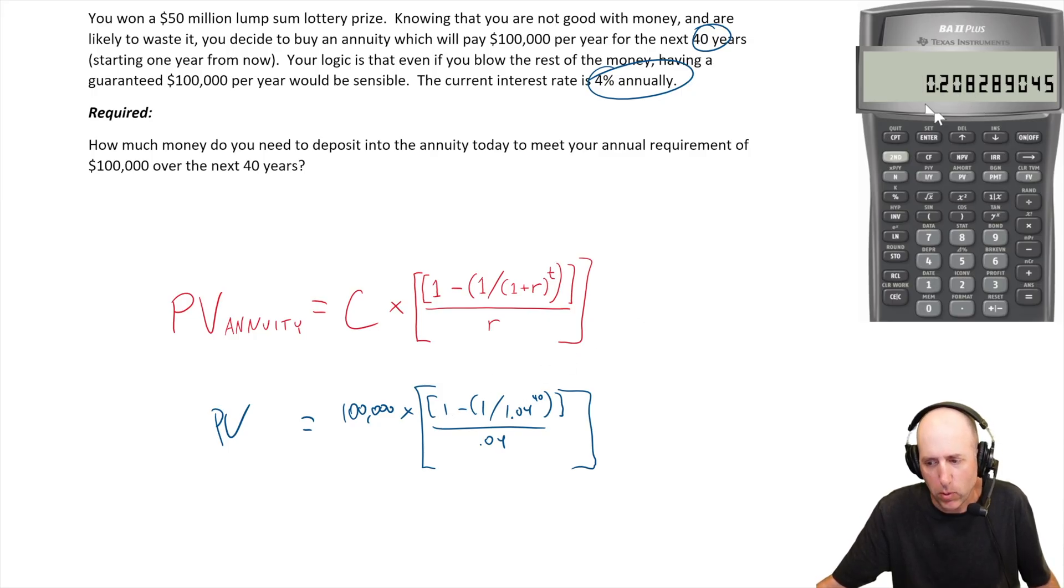1 minus 0.2 is going to be 0.792 or 793. So I do minus 1 equals, then hit the plus minus button, there it is. Now I've got the numerator complete. I divide by 0.04, and now I've resolved the entire piece of the brackets.